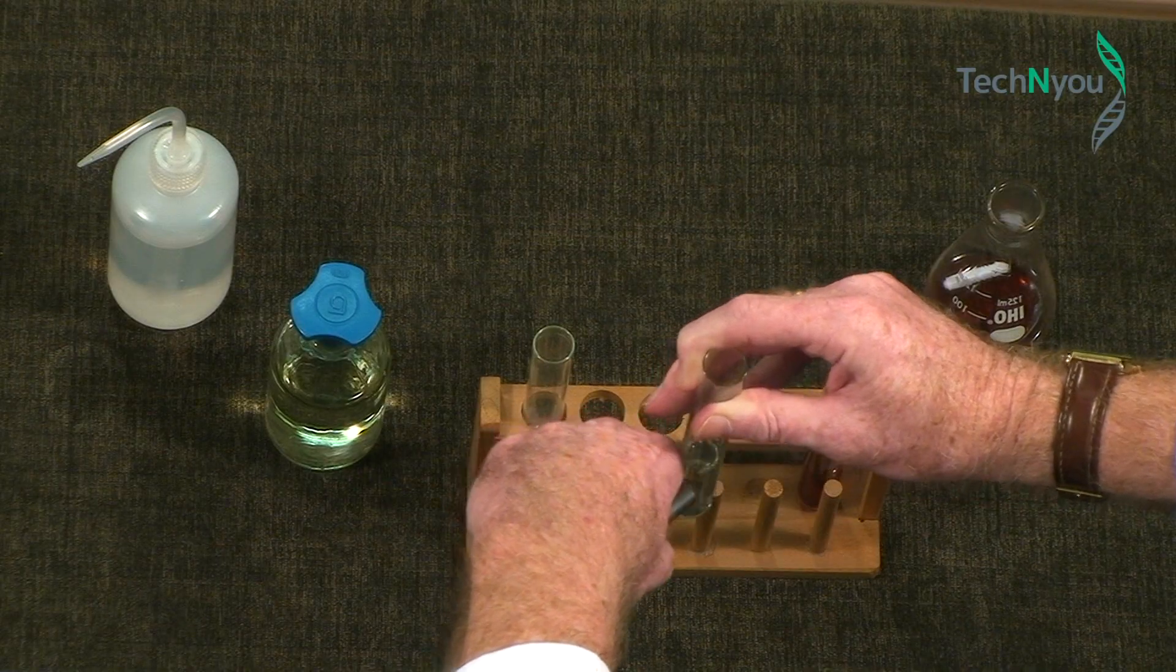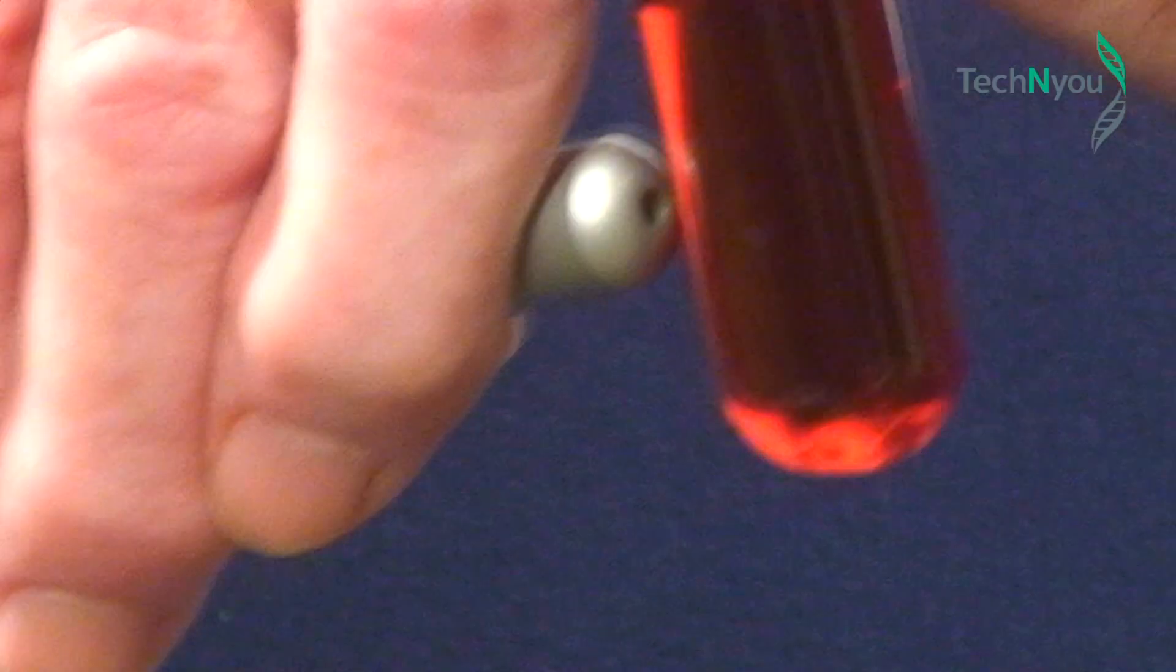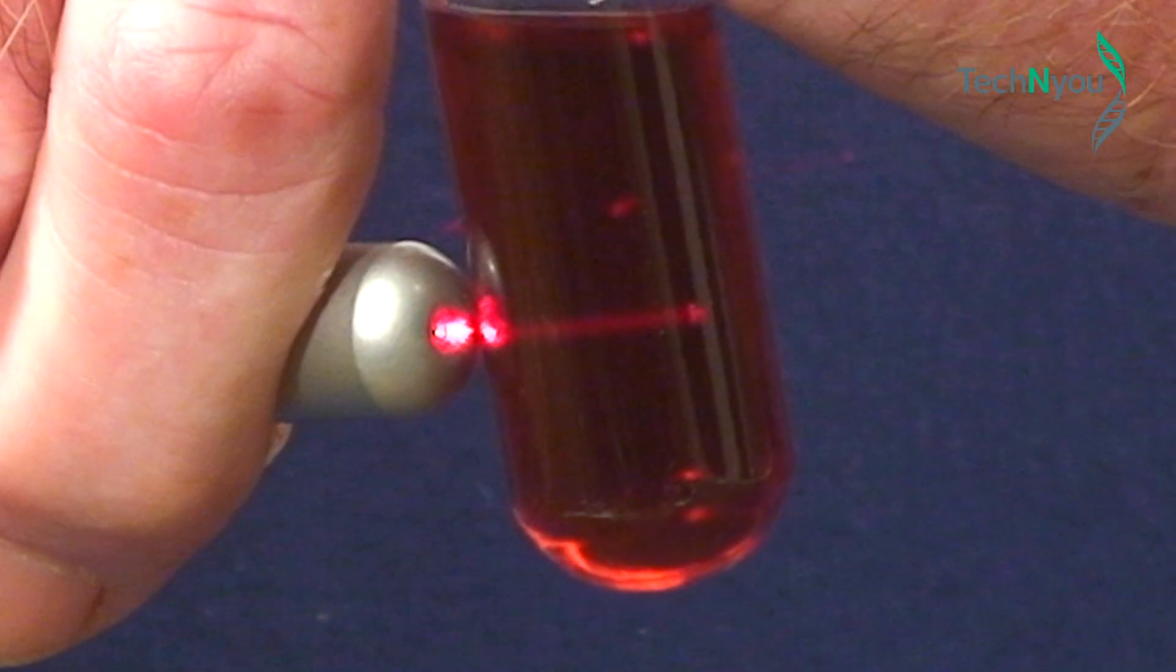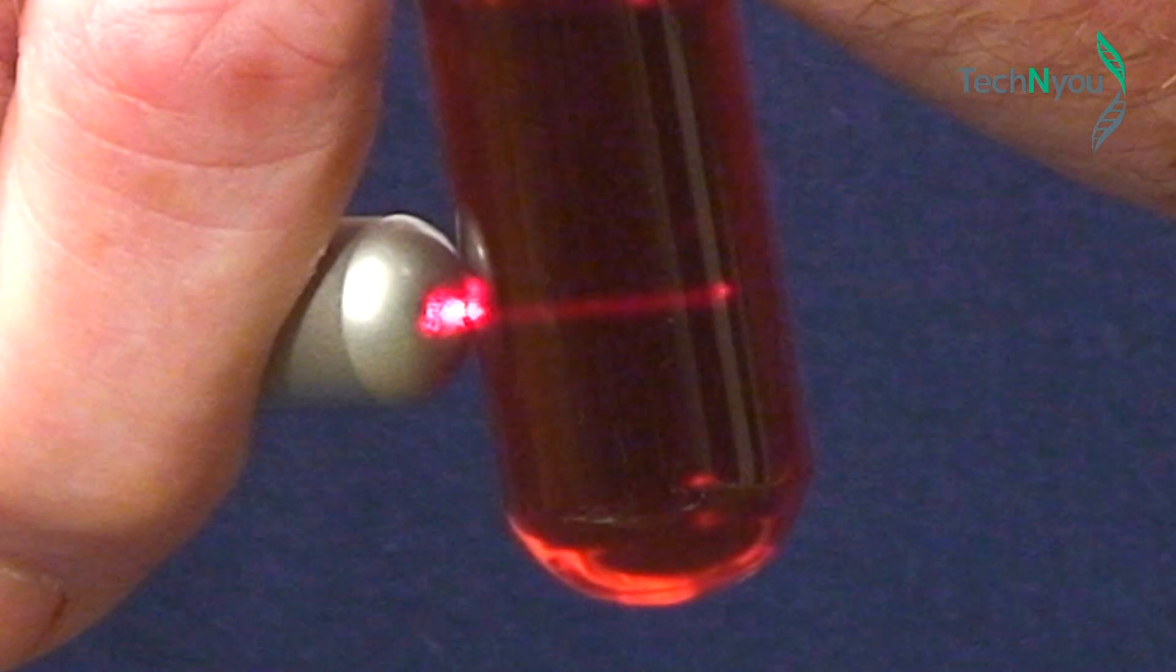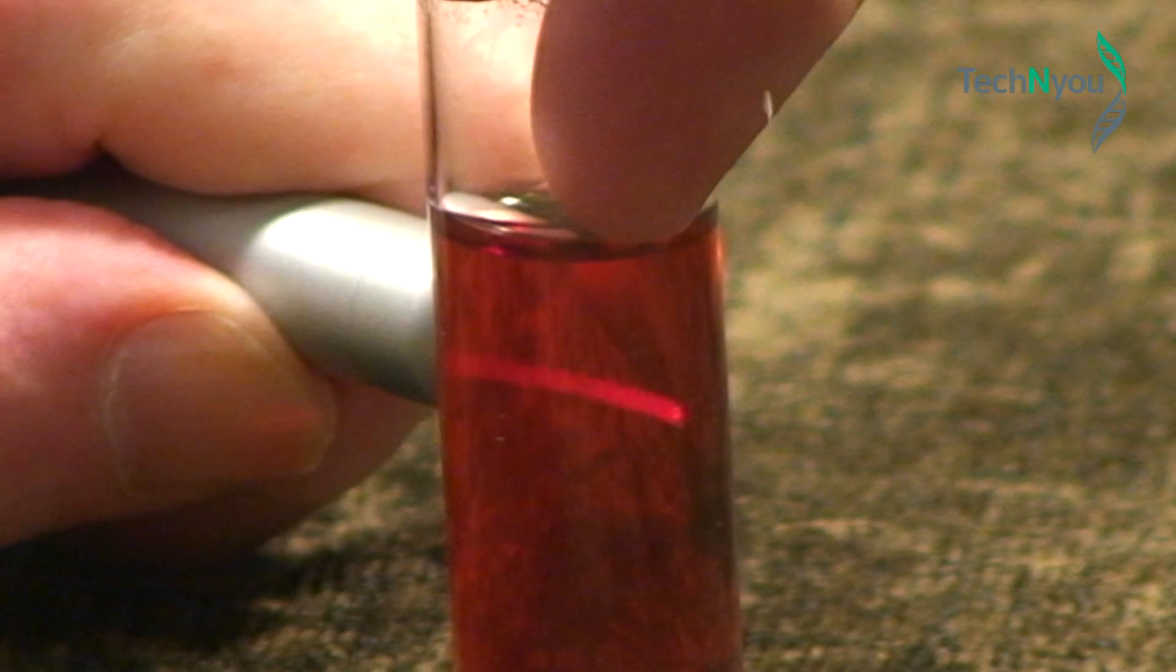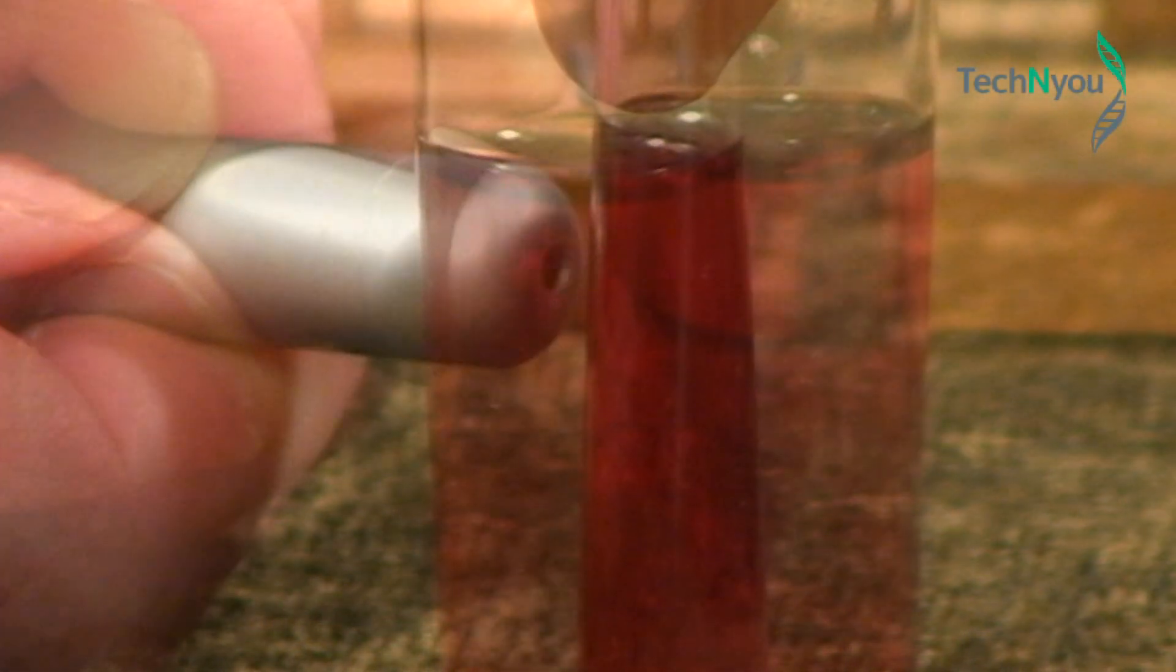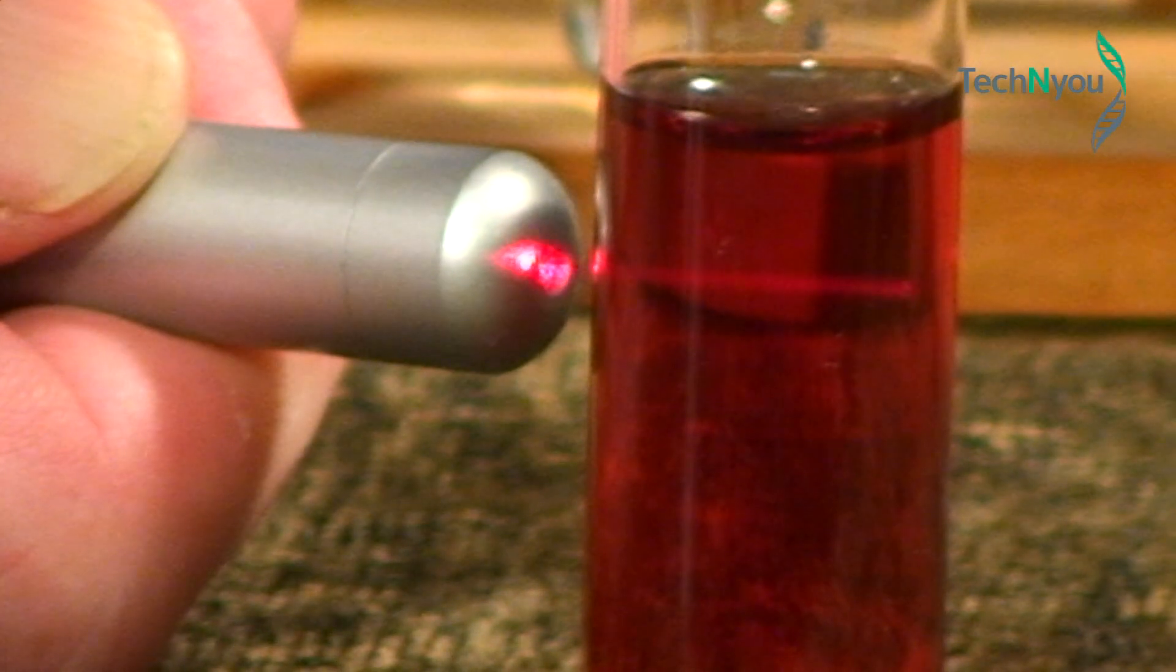Now we'll shine our red laser through the test tube we hope has the gold nanoparticles. What you see now is the passage of light as a red beam from one side of the test tube to the other. The suspended nanoparticles are reflecting and scattering the light as it passes through the solution, a response known as the Tyndall effect. We have indeed produced gold nanoparticles and have just confirmed their presence.